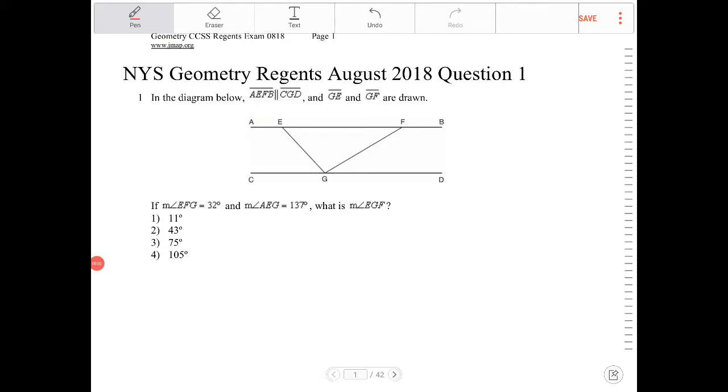In the diagram below, AFEB is parallel to CGD, and GE and GF are drawn.